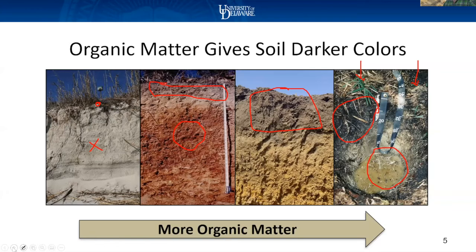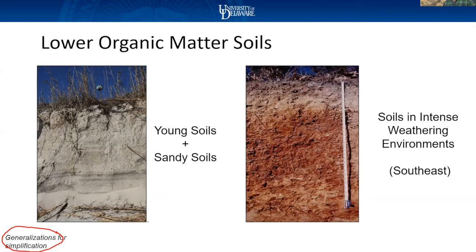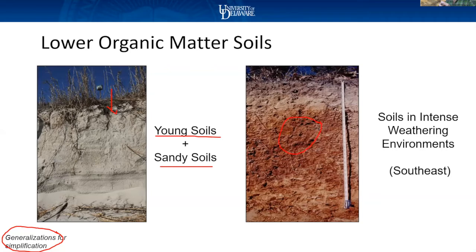These are generalizations for simplification — in agriculture there are always exceptions. In general, the younger a soil is, the less organic matter it probably has, because you need plants and inputs to increase it. Tillage can make a soil younger at the surface because you're breaking up all that formation and burning off organic matter, making it younger through disturbance. Sandy soils cannot bond to organic matter very well — it's easier for microbes to get access and break them down. Sandy soils are hard to build organic matter in; if you have 2% in a sandy soil, you're probably doing really well. Versus finer textured soils where a little no-till can get you 4, 5, or 6% organic matter because clay will bond to it and hold it in place.